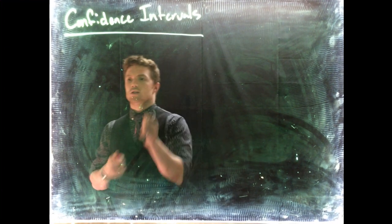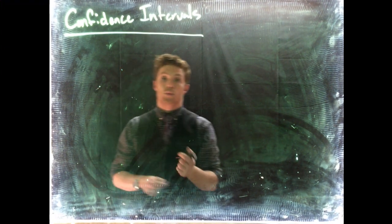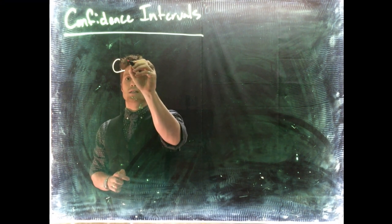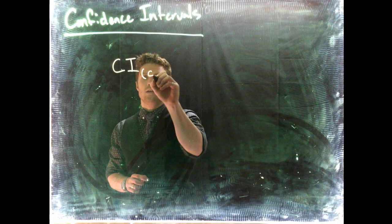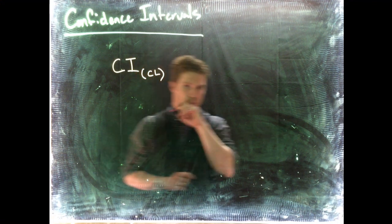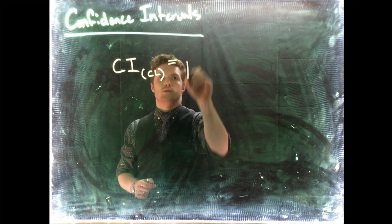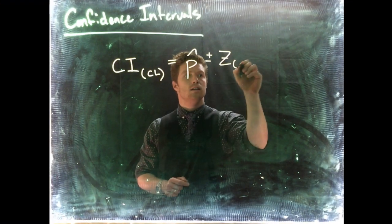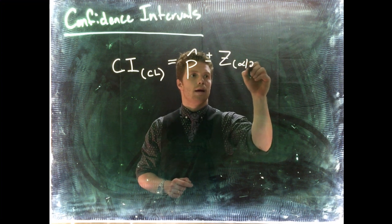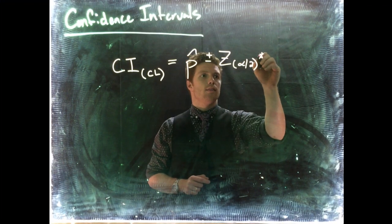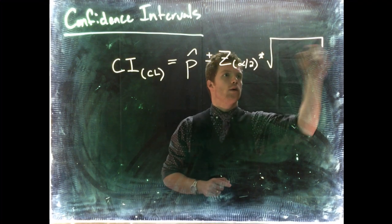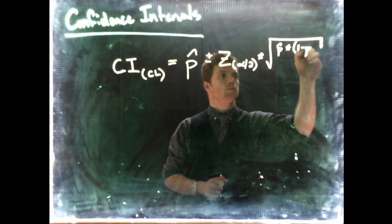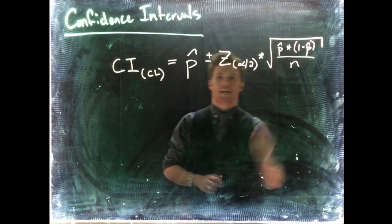So our sample proportions, or a confidence interval when we're talking about sample proportions, here's our interval. It's a confidence interval at a specific confidence level, and we can say that that is equal to p hat plus or minus z alpha divided by 2, and then we multiply this by the square root of p hat times 1 minus p hat all divided by n.